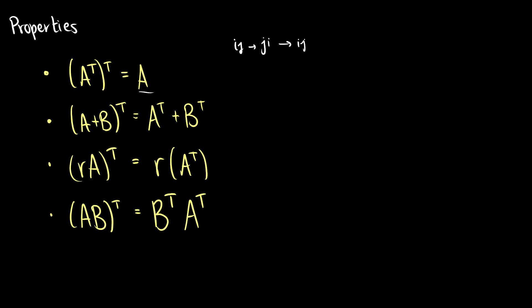If we take the transpose of two added matrices, then we get the transpose of each added to each other. Of course, if we add things together and we flip them, it's the same thing as flipping and adding. And they have to be the same size because of the rules of addition.